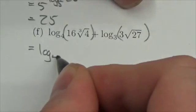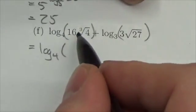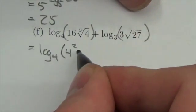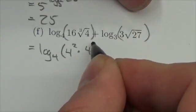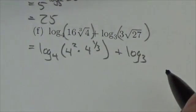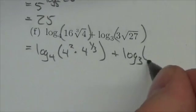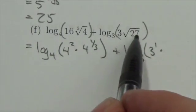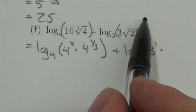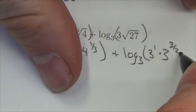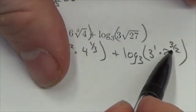So I'm seeing here this is 16 so this is a power of 4. So this is going to be 4 squared times 4 to the 1/3 and then inside the log base 3 this is 3 to the 1 times, now we got to be careful about this, 27 is 3 cubed to the 1/2 though, so this is going to be 3 to the 3/2 cubed with a square root.